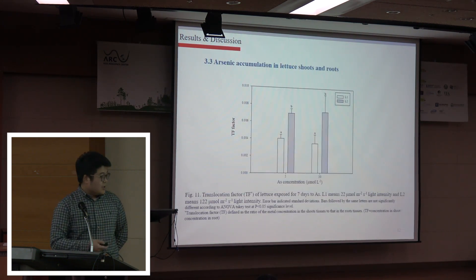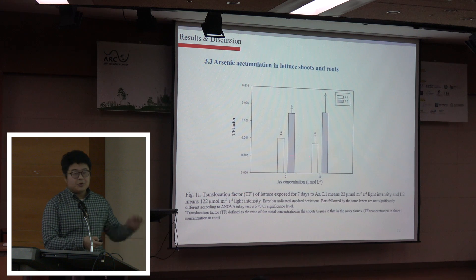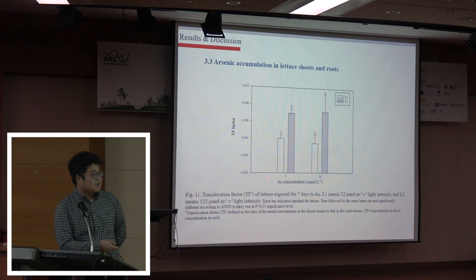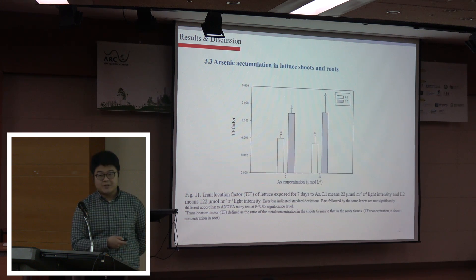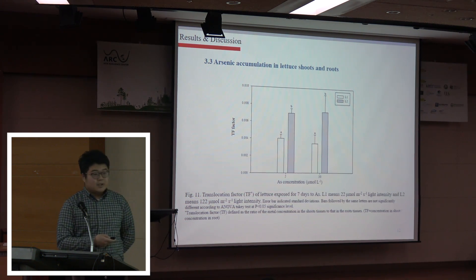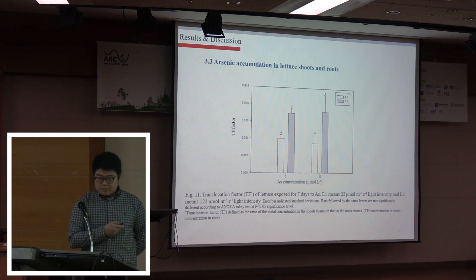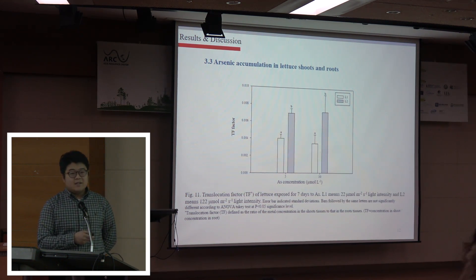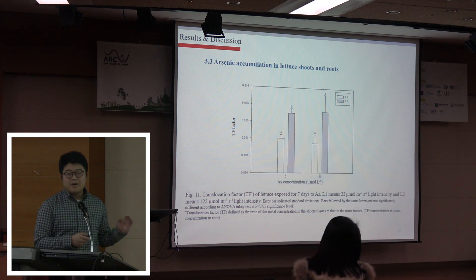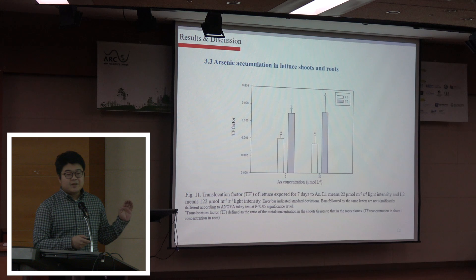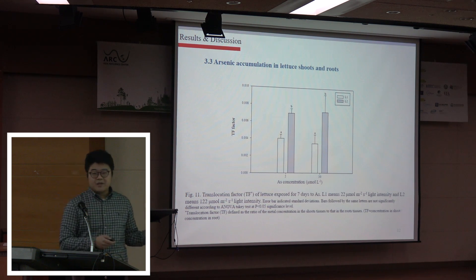The translocation factor from root to shoot also highly increased with high light intensity when the arsenic concentration in nutrient solution was the same. With these results, we can see that light intensity is a main factor for plant growth and photosynthesis, but it can also increase arsenic accumulation and be toxic to the plant.